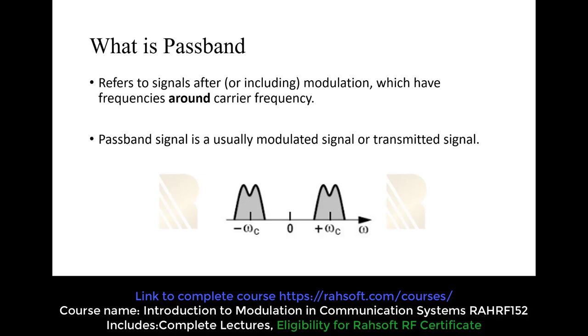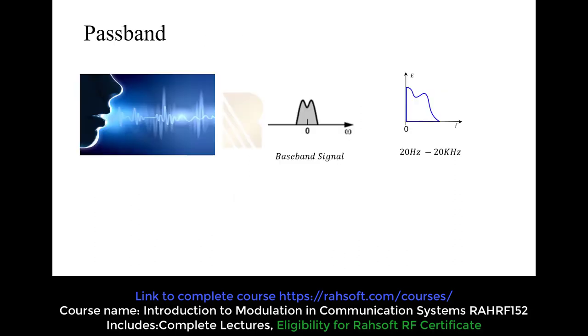Now basically this is the transmitted signal. We are going to transmit this because it has a high frequency. So passband signal is usually modulated signal or transmitted signal. So let's see what is happening to the passband here. So again, we are imagining that we have a person talking and the baseband signal spectrum. And if you check the half side is from 20 to 20 kilohertz.